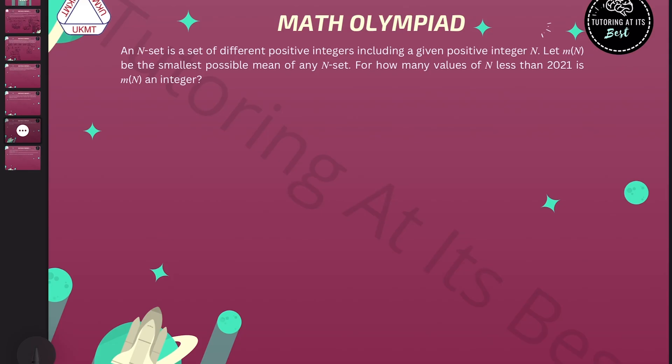This is a question about means. Before we look at n-sets, let's observe some fundamental characteristics of sets of integers. We'll start with a simple example. Let's take a set of integers: three, five, seven, nine. I've chosen them so the mean is an integer. You can see the mean is six.